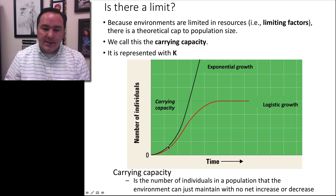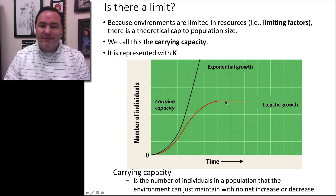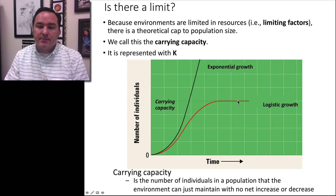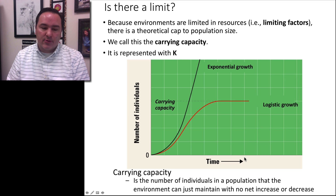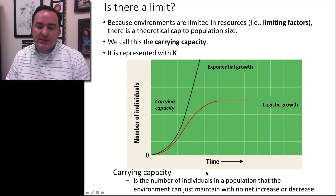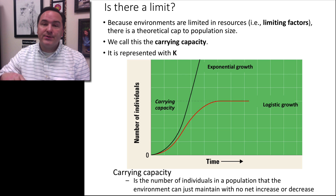Remember, we had this deviation between the exponential growth and the observed growth. That flat line at the top of the observed growth is what we call the carrying capacity. This kind of growth we call logistic growth. The carrying capacity is simply the number of individuals in a population that the environment can maintain with no net increase or decrease.